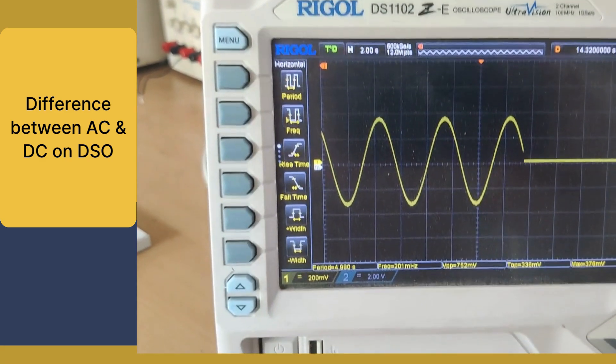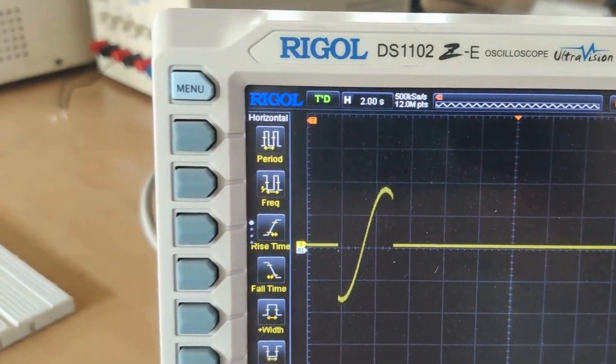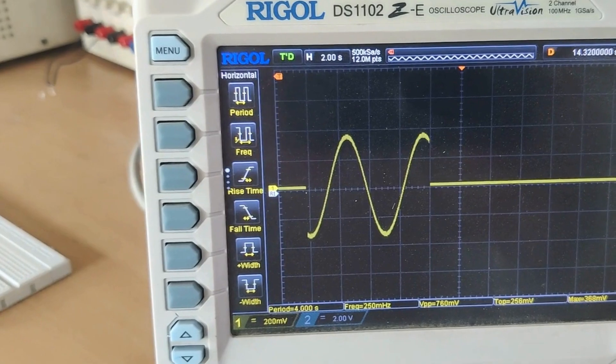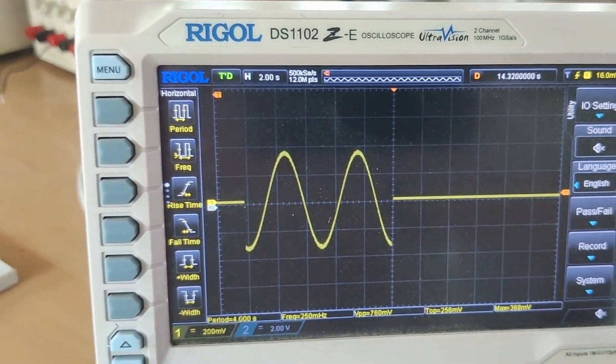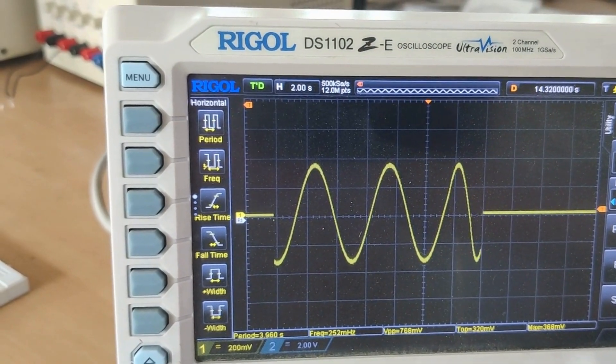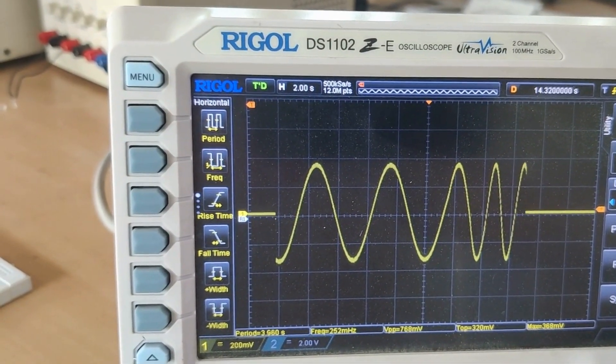It is going to be an interesting topic today. We are giving AC supply to a DSO now. The waveform you see is a smooth continuous sine wave that oscillates above and below zero. It oscillates back and forth, changing direction periodically. You can see the positive trough as well as the negative trough, a sinusoidal signal.